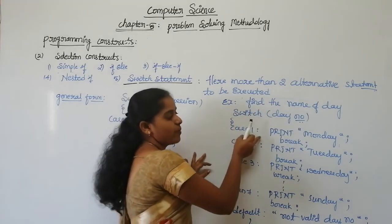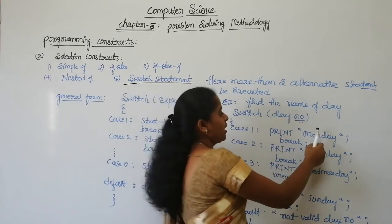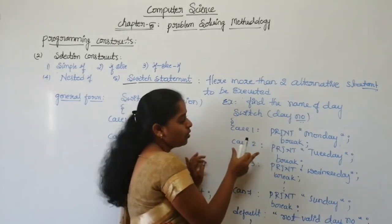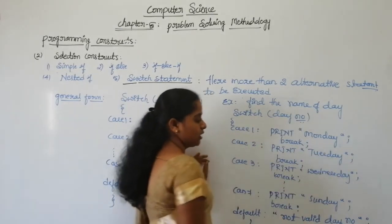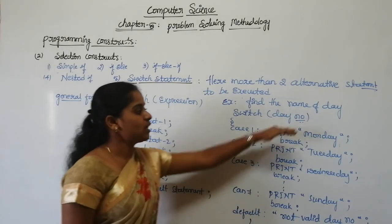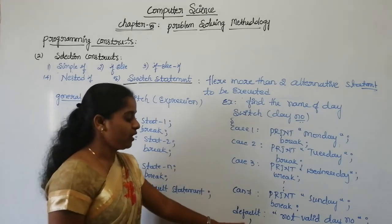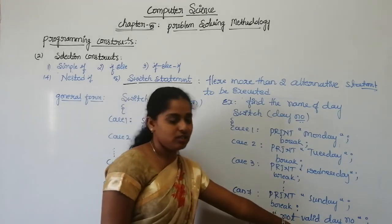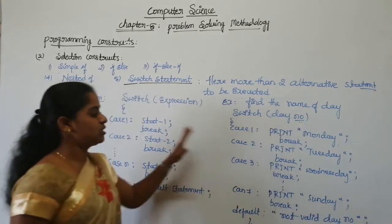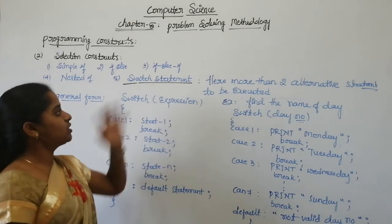If the expression matches case one, print Monday. If it matches case two, print Tuesday, and similarly continue. If the expression does not match any case, the default statement executes — not a valid day number. So this is the general form and example for the switch statement.